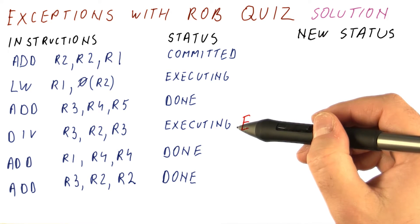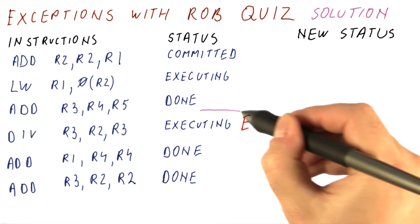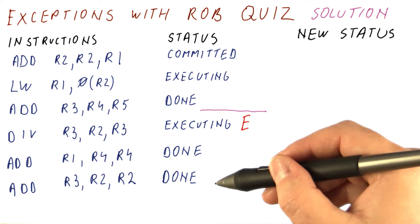When we go to the exception handler for this divide, what should be happening is that the instructions before it have finished and the instructions after it have not finished, as far as the programmer is concerned.